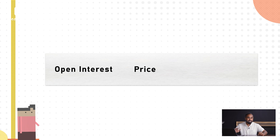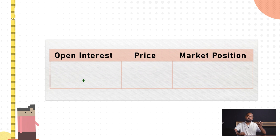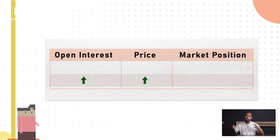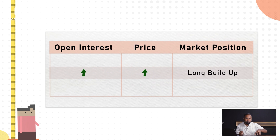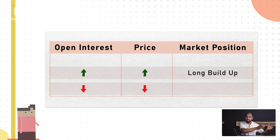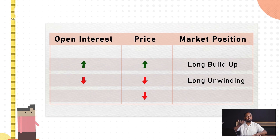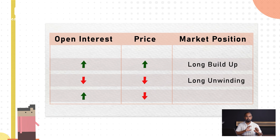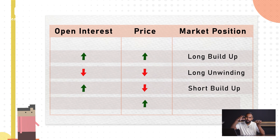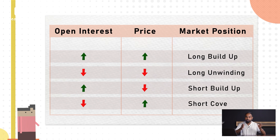Let's combine price and OI to understand what positions are being built. When price is increasing and OI is also increasing, long positions are getting built — called long buildup. When price is falling and OI is also falling, long positions are being squared off — called long unwinding. When price is falling and OI is increasing, short positions are being built — called short buildup. Finally, when price is increasing and OI is falling, shorts are getting covered — called short covering.